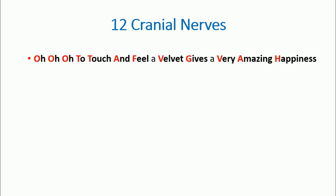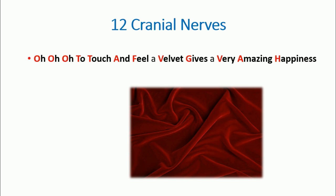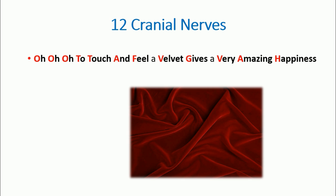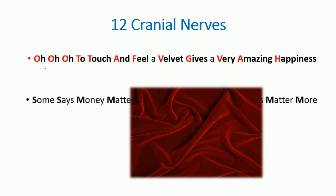This is what you need to remember — just the sheer feeling of touching velvet. In this whole sentence, the first letter of each word, shown in red, represents each individual cranial nerve. This first sentence gives you the total number of nerves, and the second sentence gives you the type of each nerve.